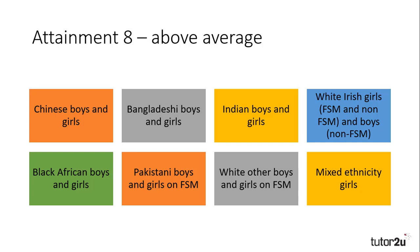Chinese and Indian students, regardless of gender or class, achieve above average, as do black African students. It's useful to note the differences between black Caribbean and black African achievements, as students often mention these groups as one and the same, but there are significant differences in cultural attitudes reflected in educational achievement. Bangladeshi and Pakistani students also perform above average, though only Pakistani students on free school meals achieve above average among that group. White Irish also achieve above average, with the exception of boys on free school meals, who achieve slightly below.